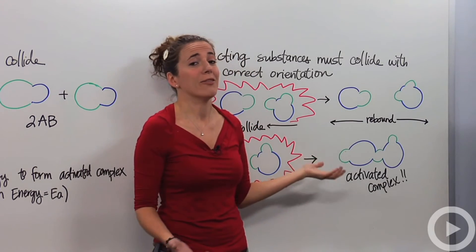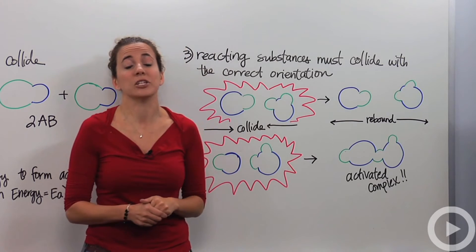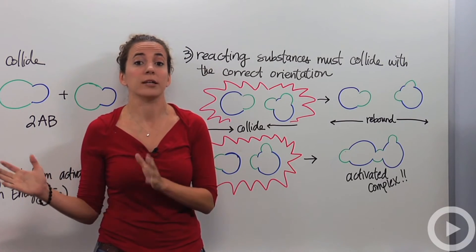And then they get their activated complex, and then the reactants form the products. So these three things are the basis of the collision theory and how reactants go from reactants to the products.